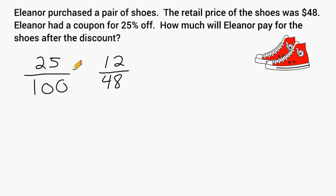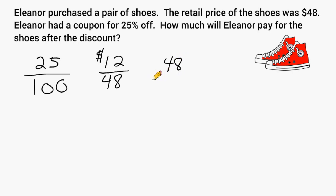If you were to simplify 25 out of 100 and 12 out of 48, you would see that they are both equal to one-fourth or one-quarter. So we already figured out that we would get a $12 discount on the shoes. But we still have to take our total of $48 and subtract from it $12, because we get 25% off the retail price. So what is remaining is what we have to pay, which would be $36 in total.